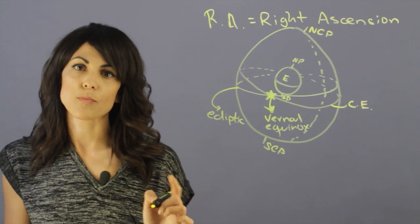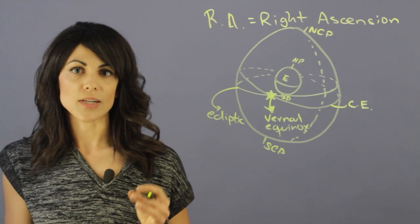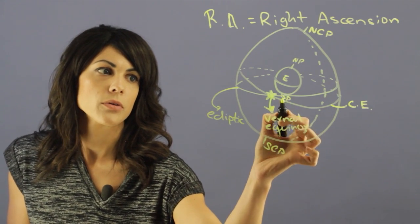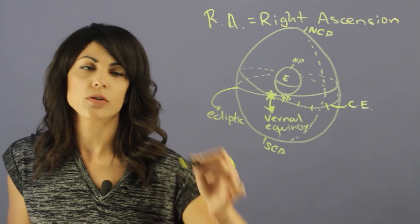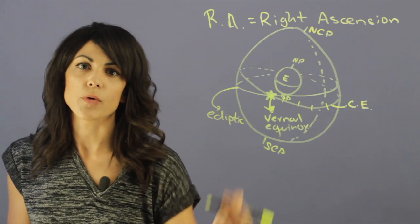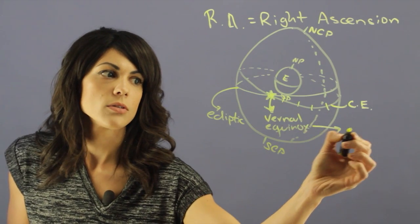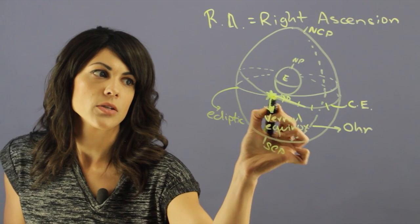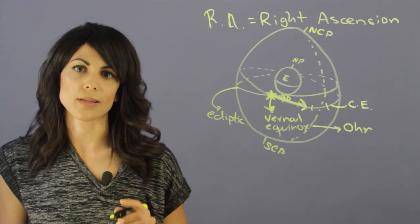And this is important because this is the beginning of right ascension. And right ascension is actually measured in hours. So if we were to break down this into 24 hours, we will have the right ascension measurements. So this is zero hours for right ascension. And right ascension grows as it goes this direction, so eastward along the celestial equator.